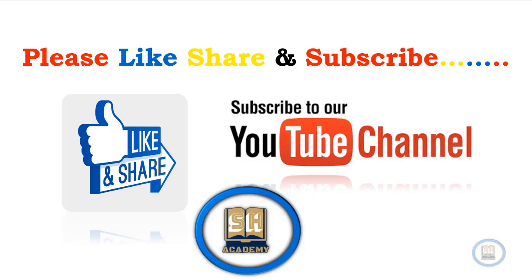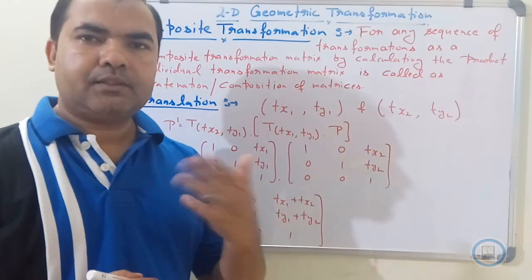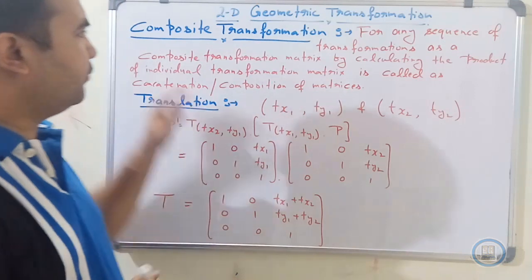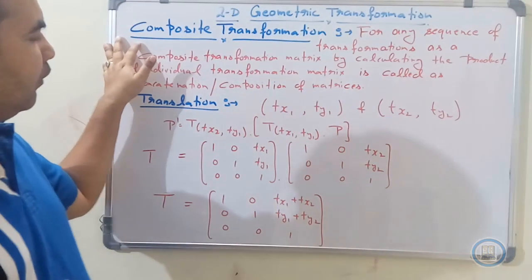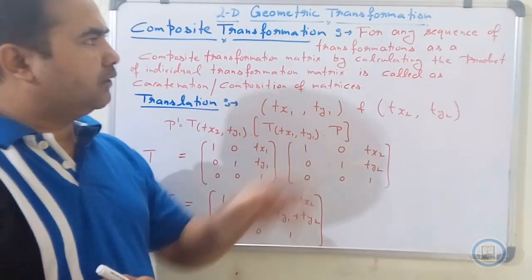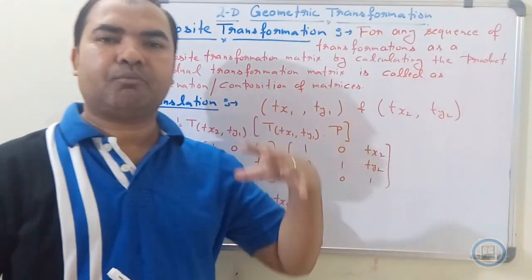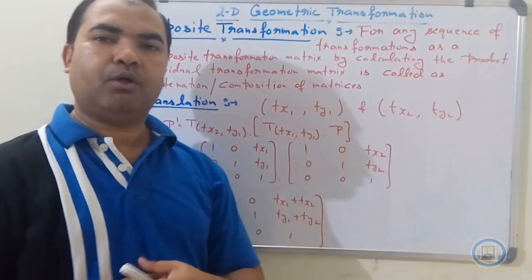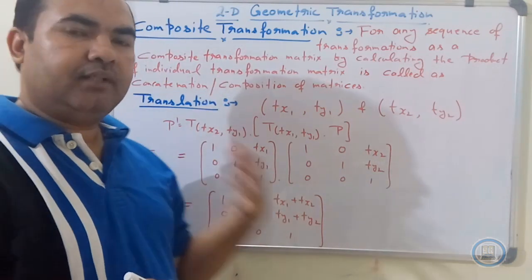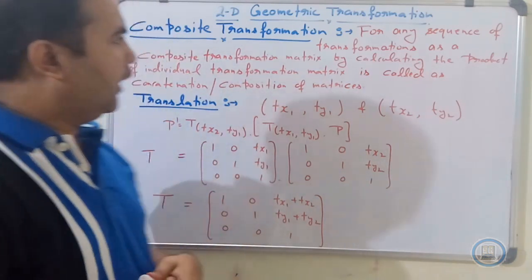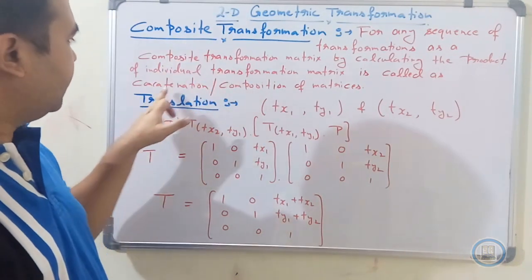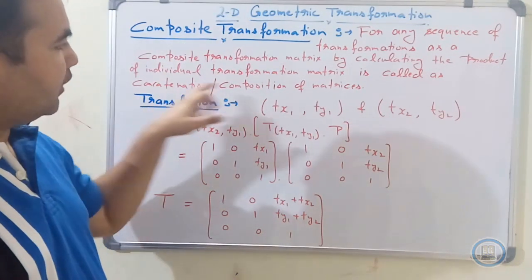In this session we are going to discuss about composite transformation, or two-dimensional composite transformation. Composite transformation is the sequence of operations when we are applying multiple operations on the same object at the same time. The matrix formed with the help of composite transformation is called a concatenated matrix or composition of matrices.